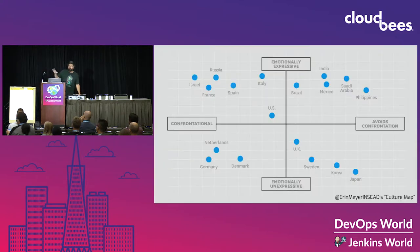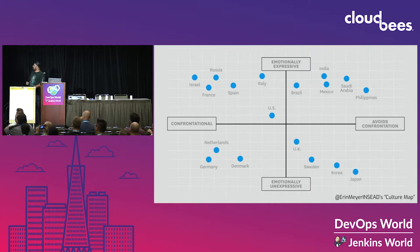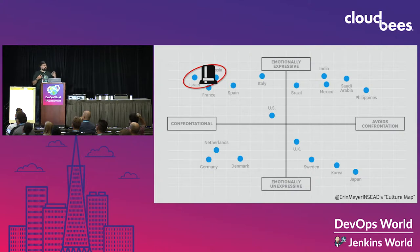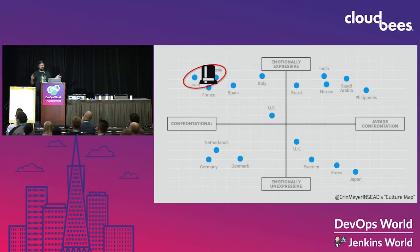Important disclaimer: this is the Culture Map from the book 'Culture Map' by Erin Meyer. The most emotionally expressive and confrontational people are from Russia and Israel. I am from both. This conflicts with the passive-aggressive culture of California and Silicon Valley. So if I offend people, I'm not really sorry.